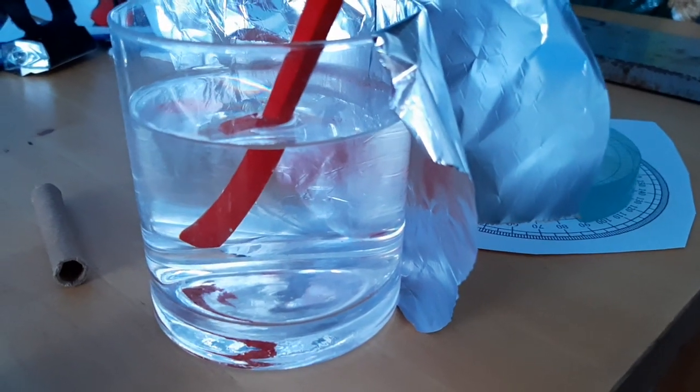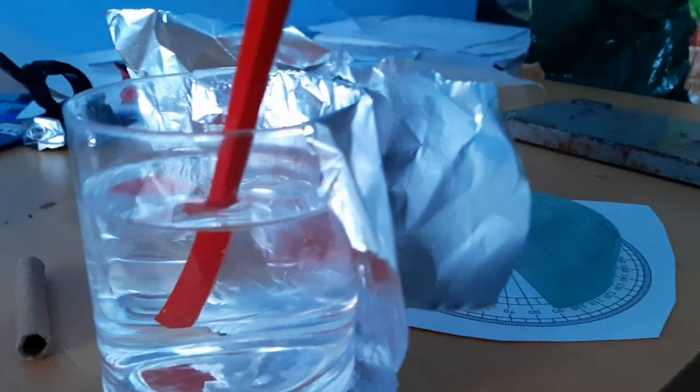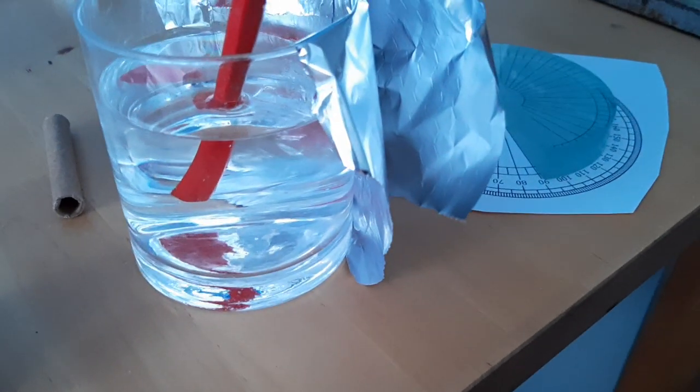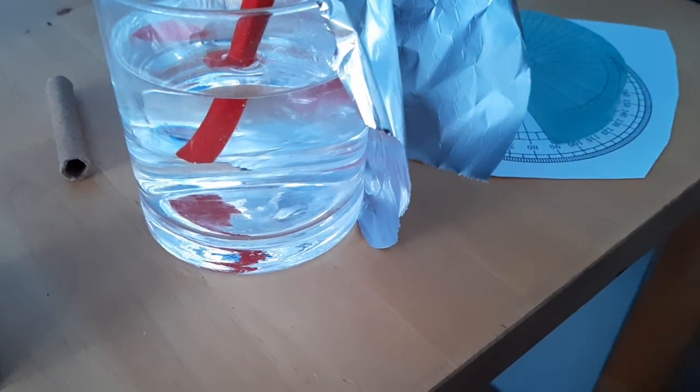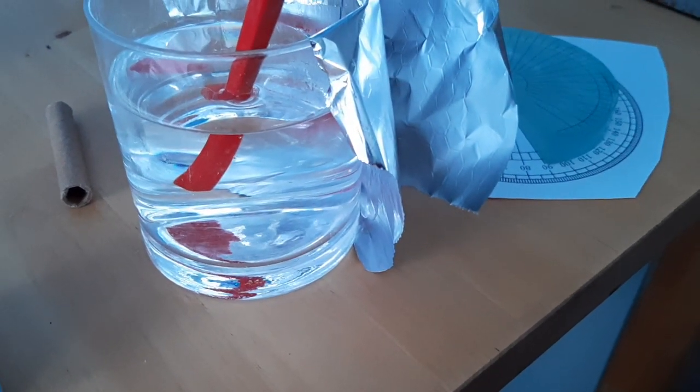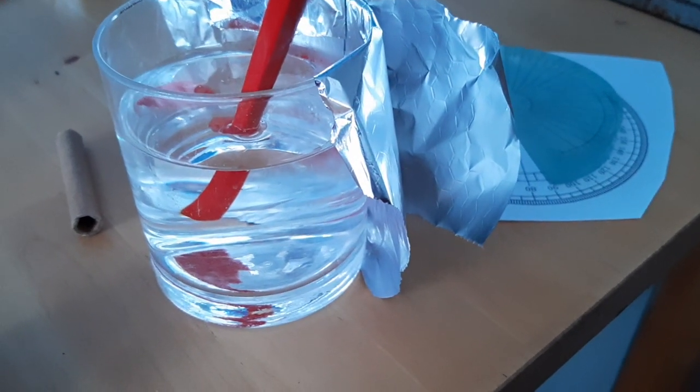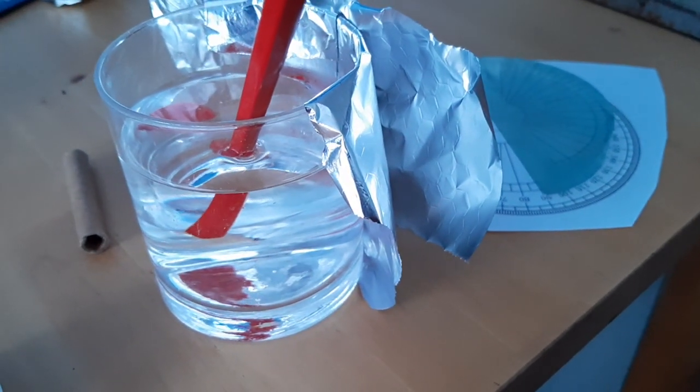Hi there and welcome along to some more physics. Obviously we're doing refraction at the moment, so I'm just showing you a crazy world of refraction. Looks like there's a gap in the pencil, doesn't it? Obviously seeing the pencil through the air with one refractive index, from through the water with a different one, and that's bent the rays of light. But that's not really what we're up to today.